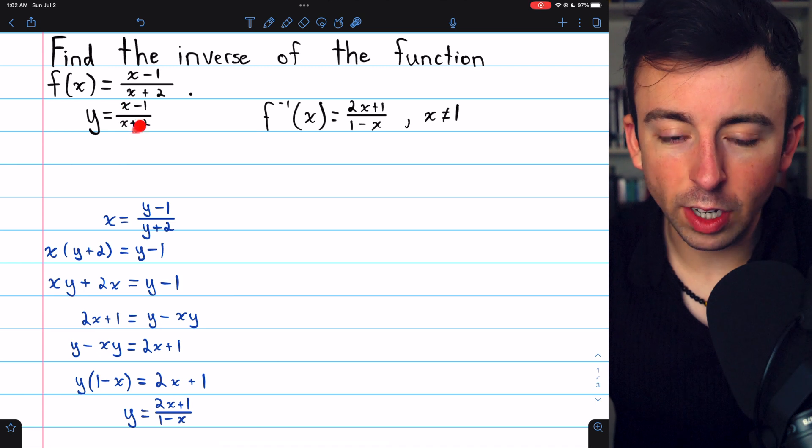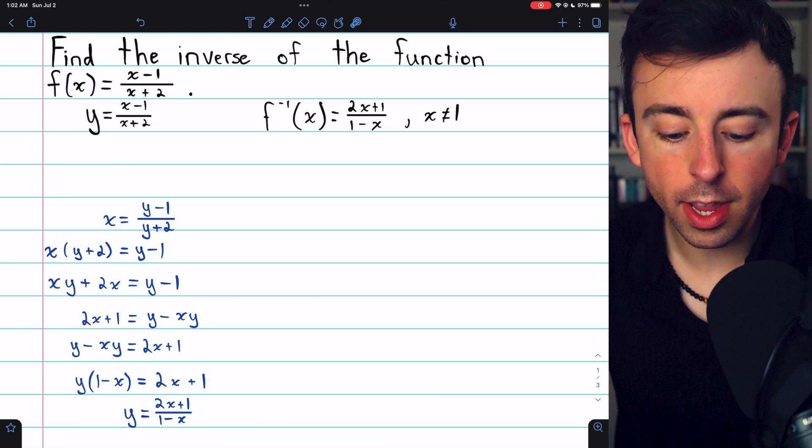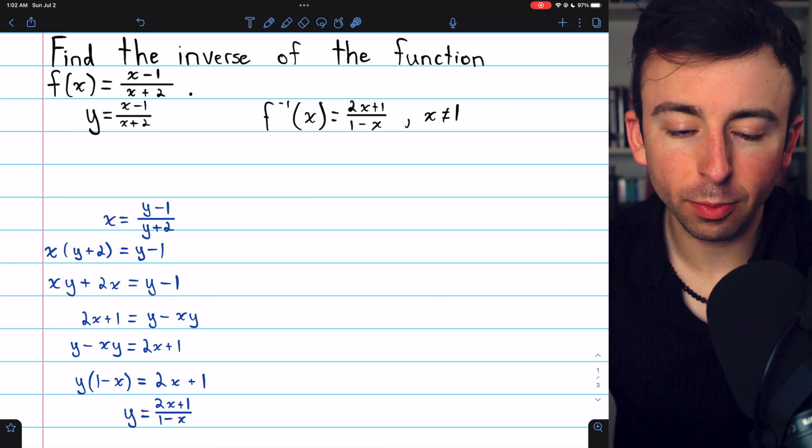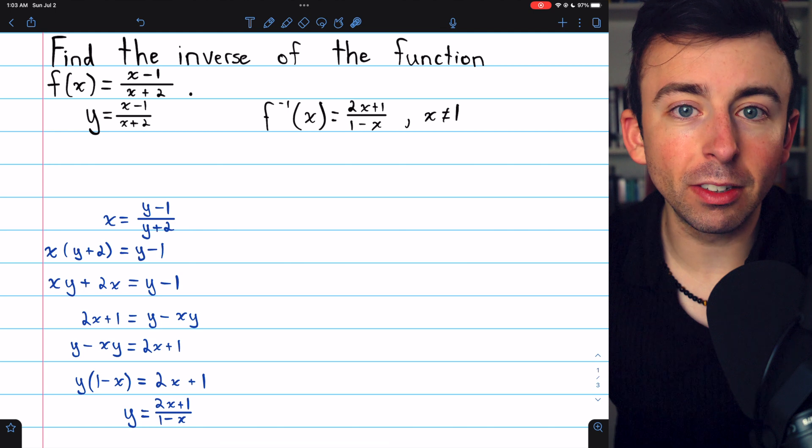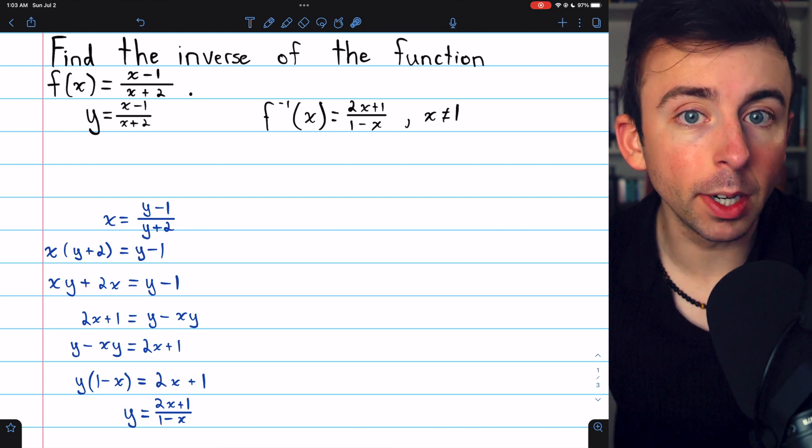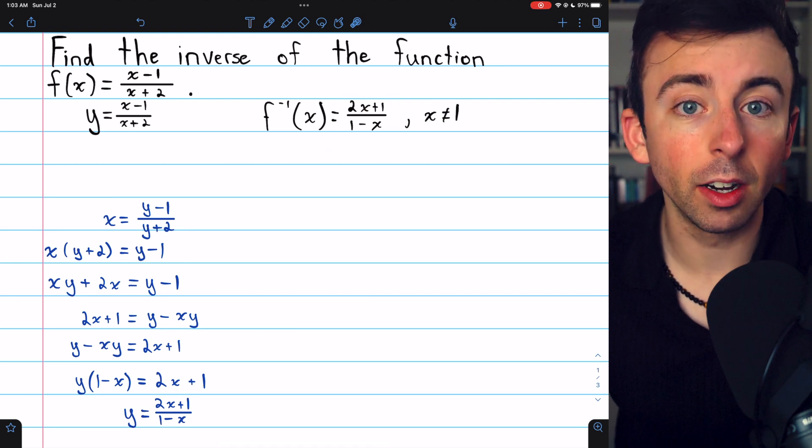Now, the original function could never output a value of one. x minus one divided by x plus two can never equal one. So it shouldn't be surprising since the original function can't output one, the inverse function can't take an input of one.